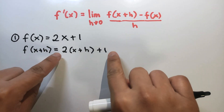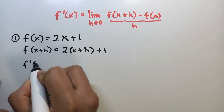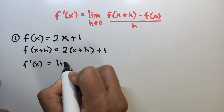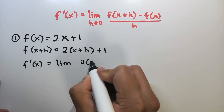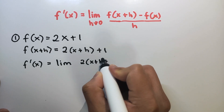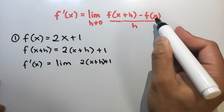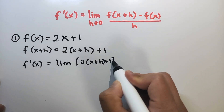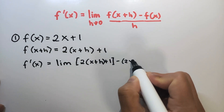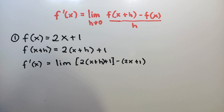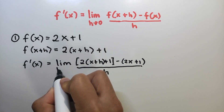So now plug in the expressions. We have f prime of x is equal to the limit of f of x plus h, which is 2 times x plus h plus 1, and then minus f of x, which is the given function 2x plus 1, over h as h approaches 0.